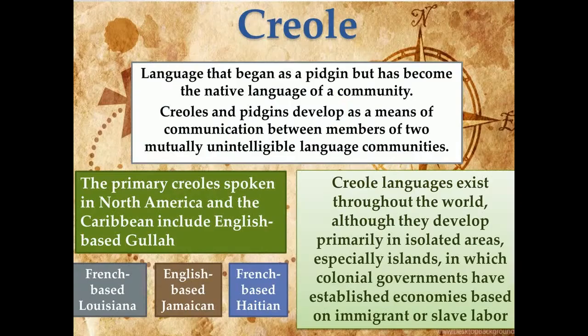A creole language begins as a pidgin but becomes the native language of a community. Creoles and pidgins develop as a means of communication between members of two mutually unintelligible language communities, with simple grammatical structures and limited vocabularies, although the grammar of a creole is more complex than that of a pidgin. The rules of creole grammar remain uniform from speaker to speaker, whereas pidgin grammar varies among speakers. Pidgins have no native speakers; when a pidgin acquires native speakers through years of use, it is called a creole. Creole languages exist throughout the world, though they develop primarily in isolated areas, especially islands.